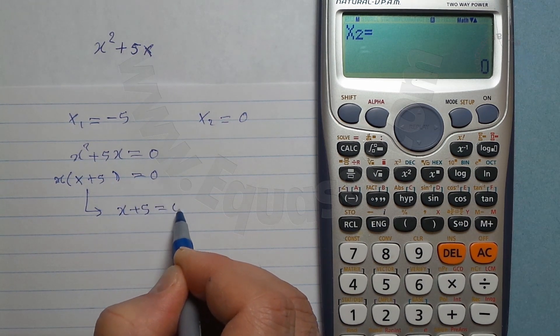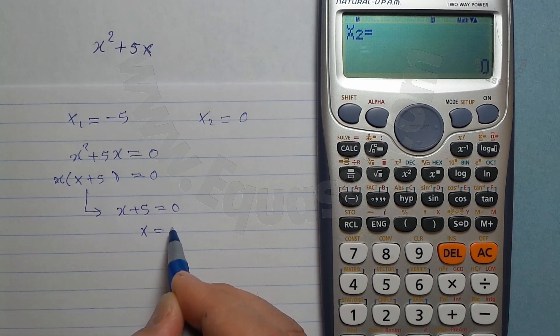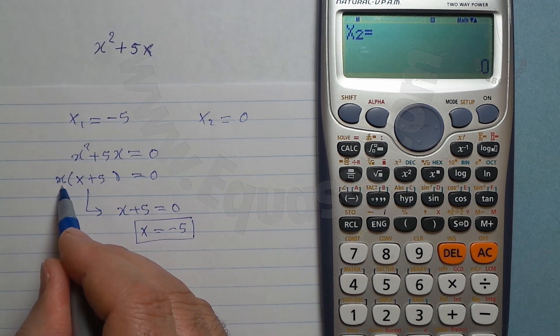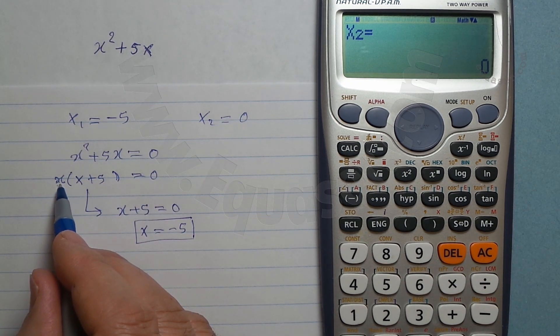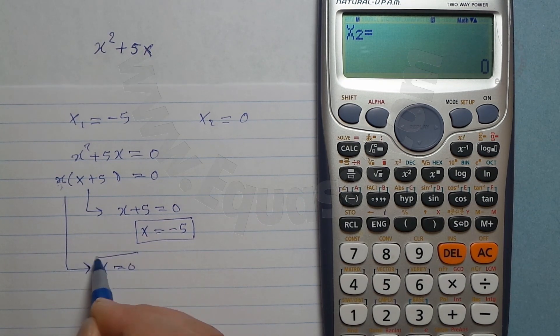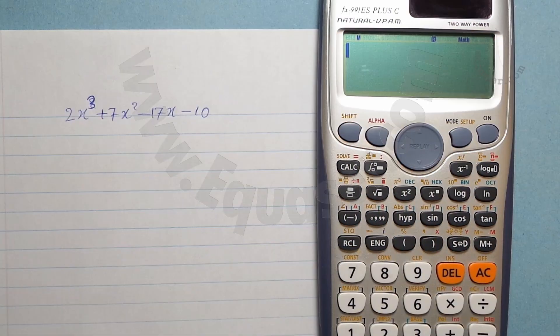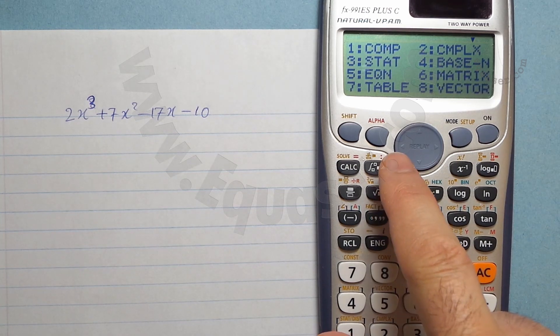So if we do this one, x plus 5 equals 0, subtract minus 5 from both sides, so it will be minus 5, the first one. And then this is already x is equal 0. It doesn't have any other value, so x is equal 0.